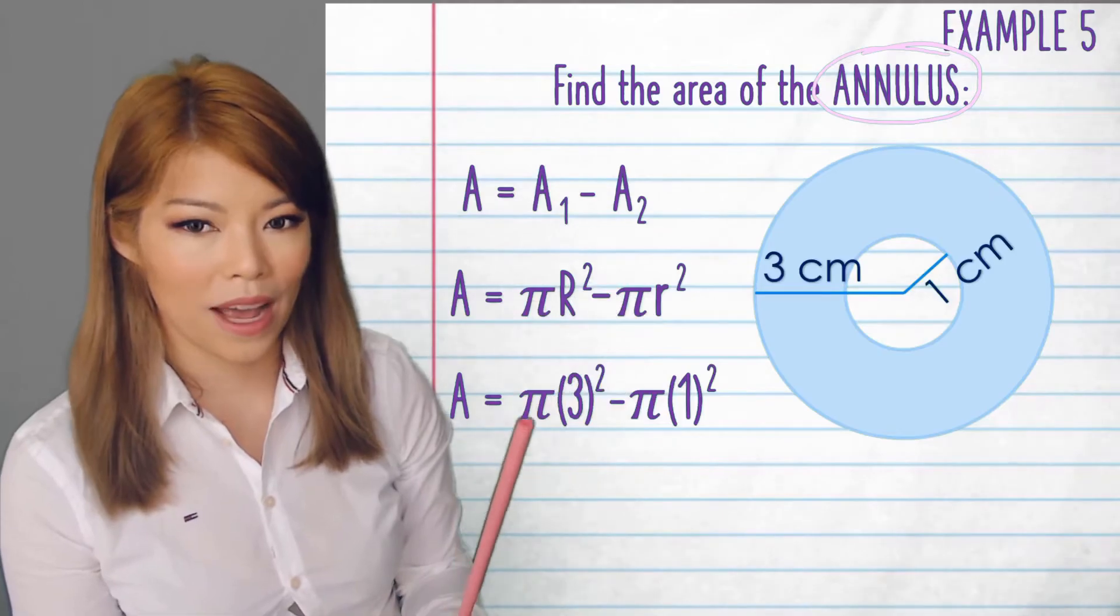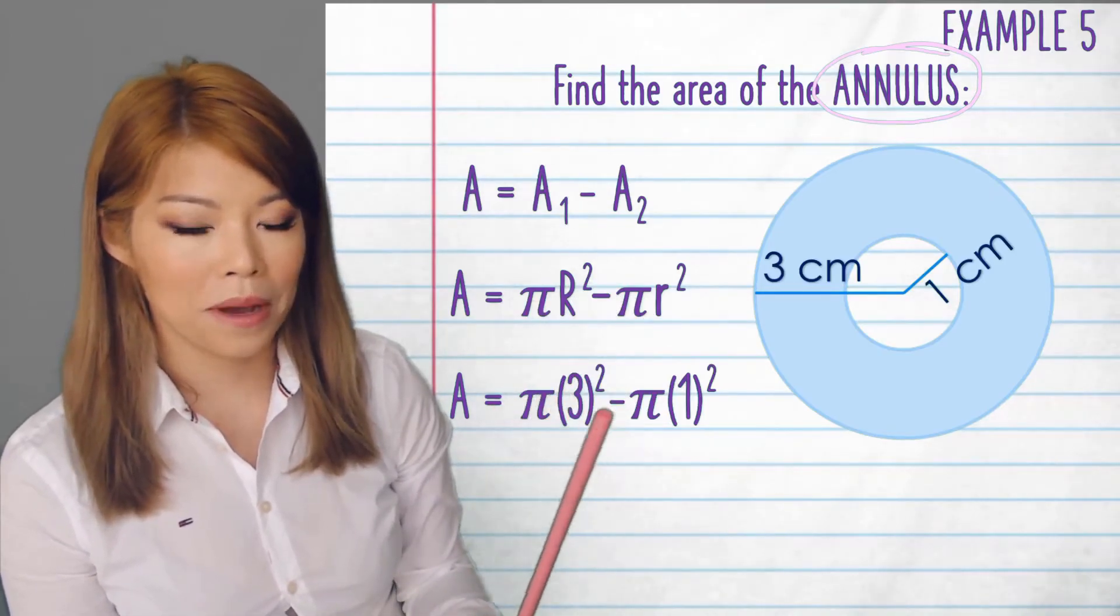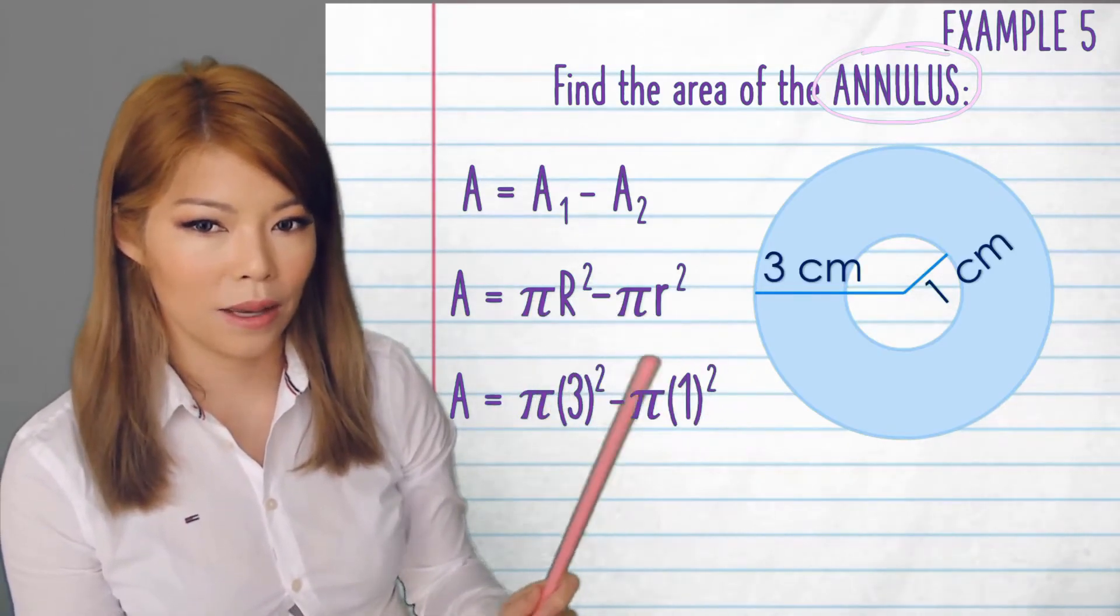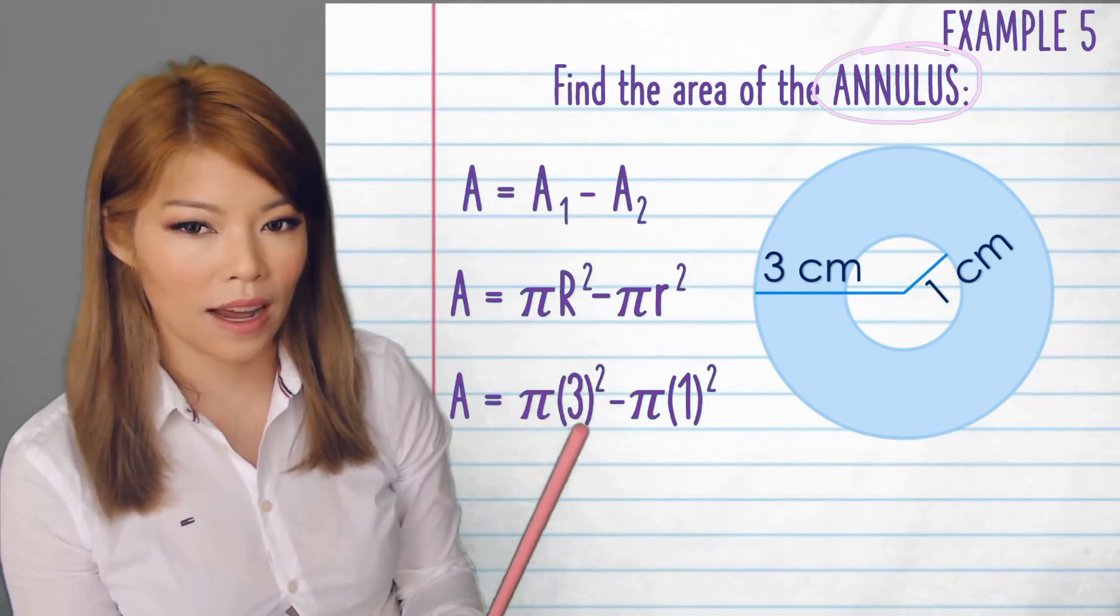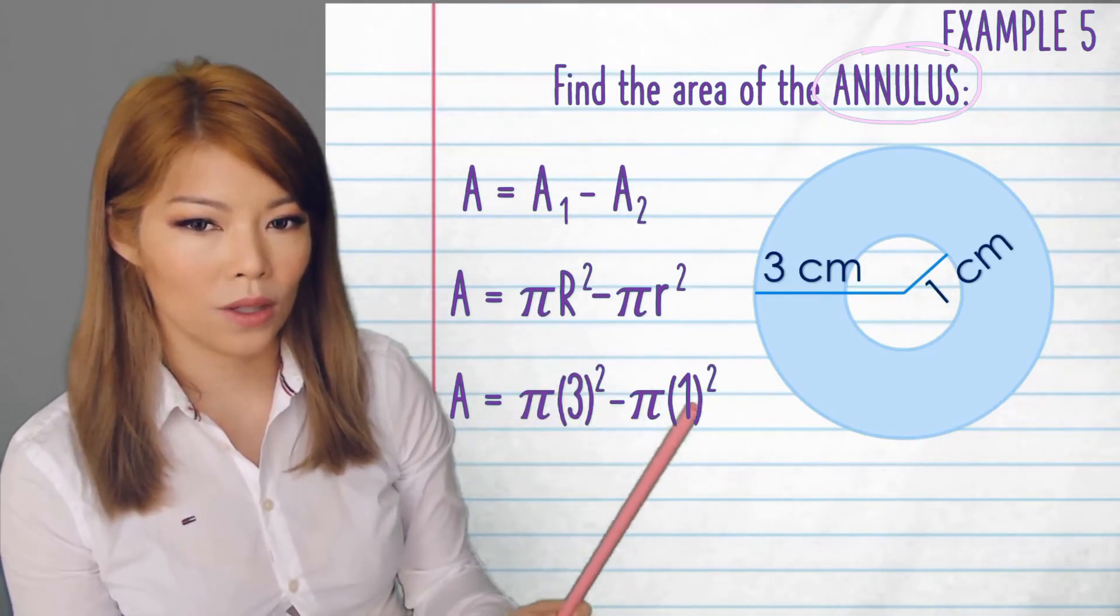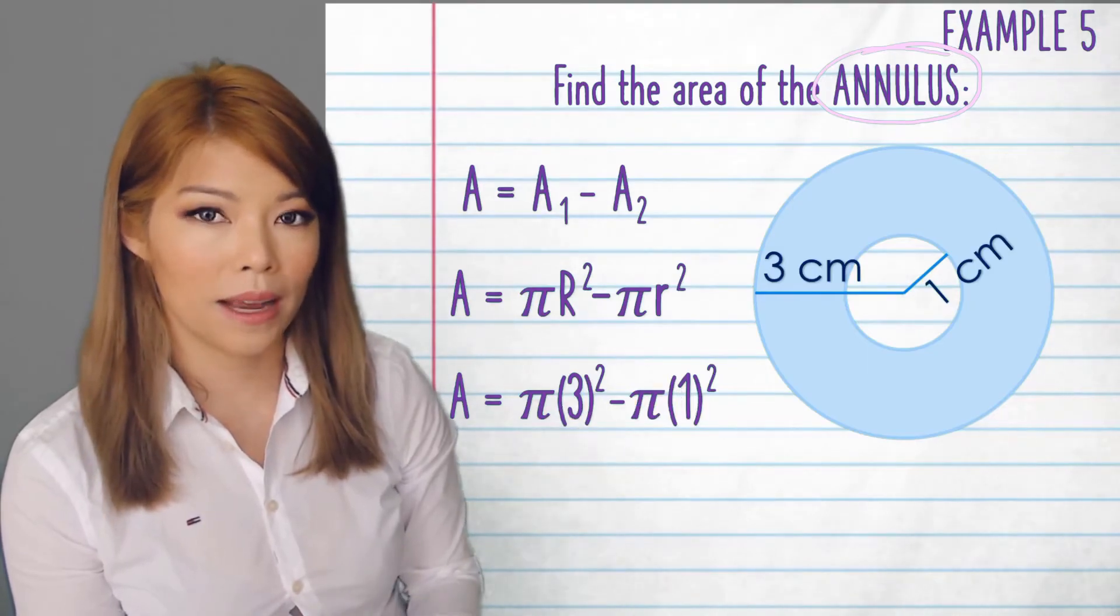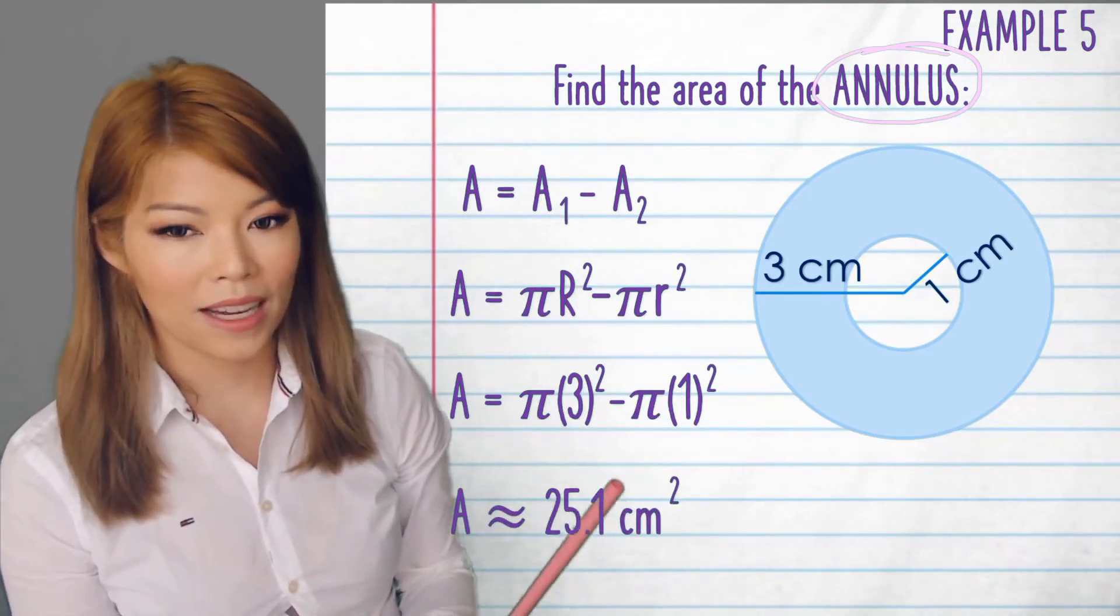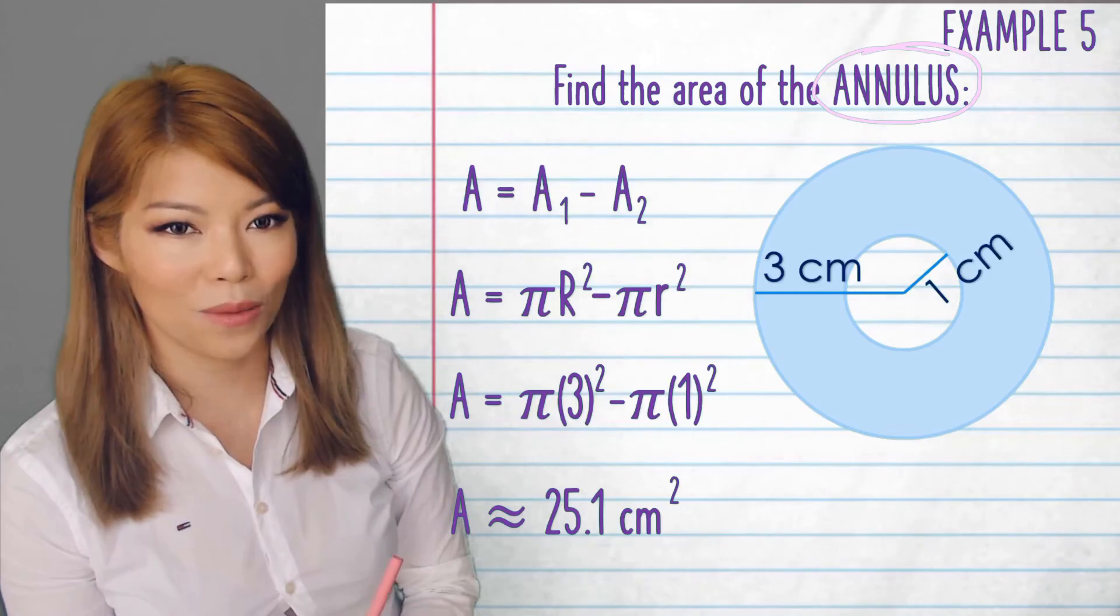So now we have pi 3 squared minus pi 1 squared. You can put that all into the calculator, or you can do it in your head as 3 squared is 9 minus 1 is 8. So I would just put in 8 pi in the calculator, and I would get 25.1 centimeters squared.